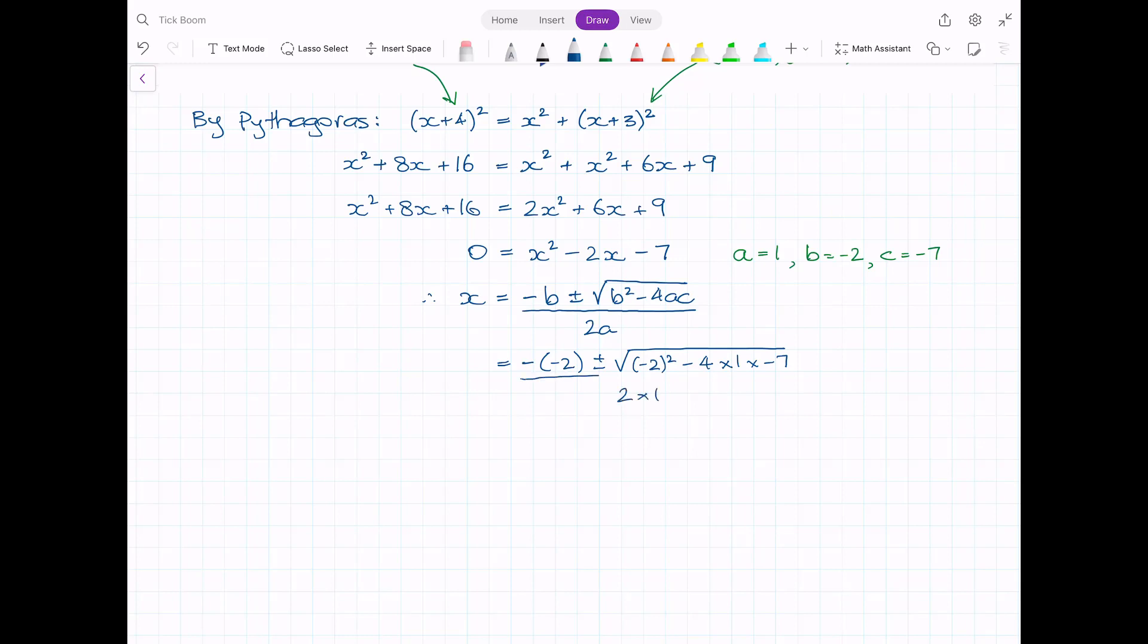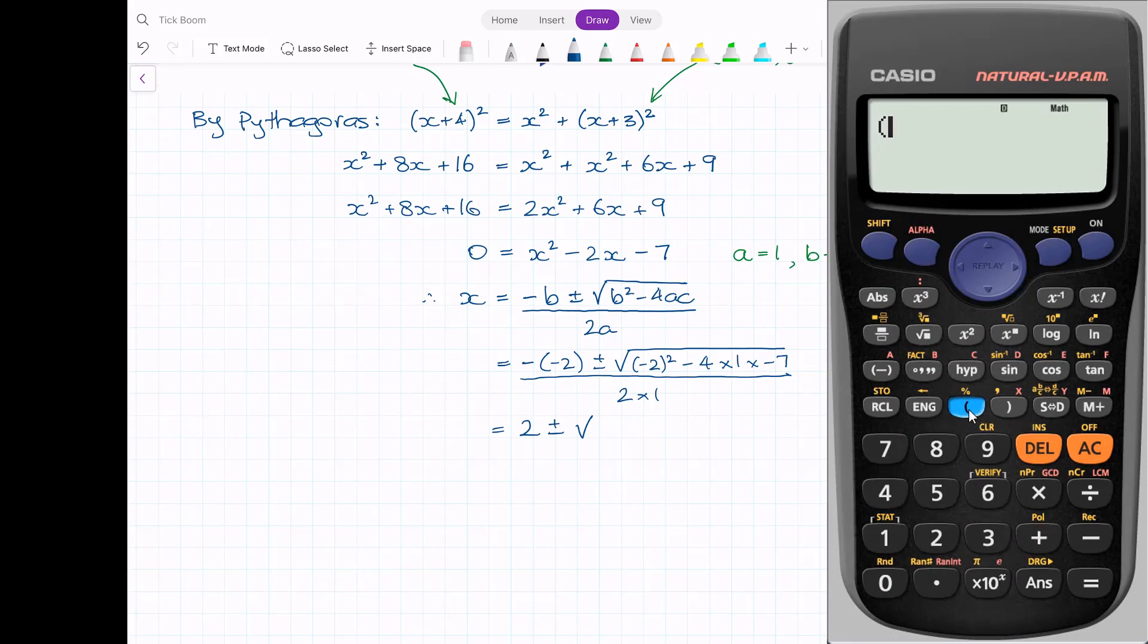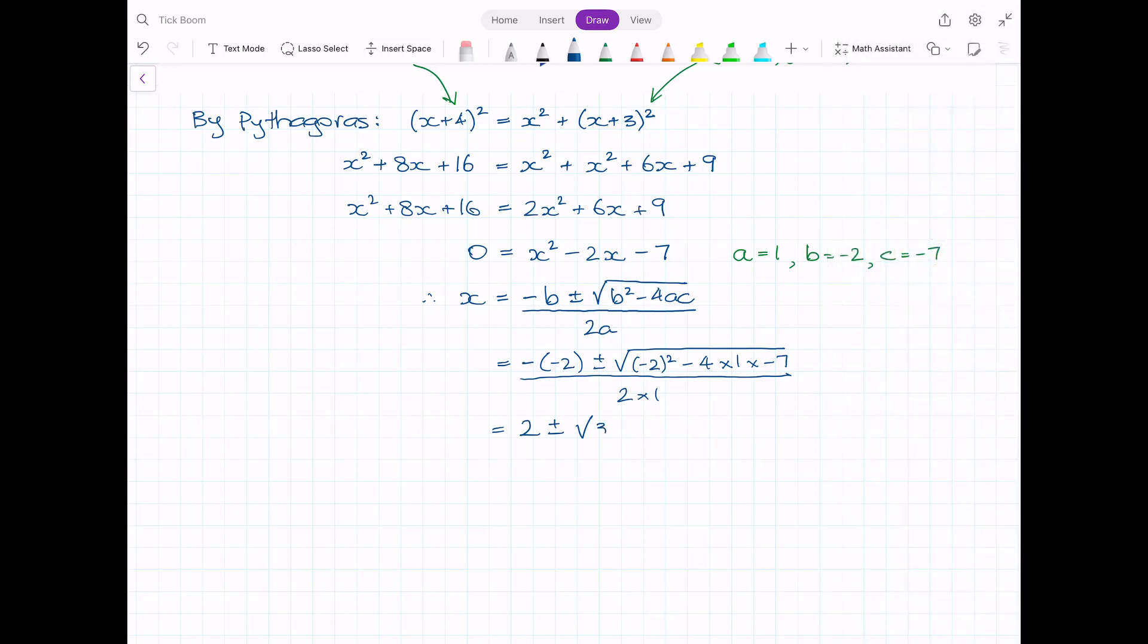If I clean this up a bit, negative negative 2 will just be plus 2, plus or minus the square root. If we go to our calculator and put in (-2)² minus 4 times 1 times -7, we'll get 32 sitting under the radical. And that's all divided by 2.